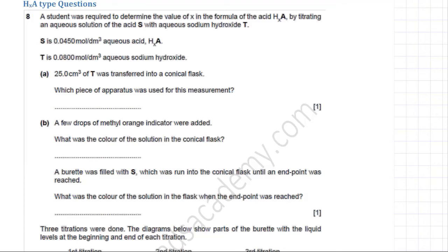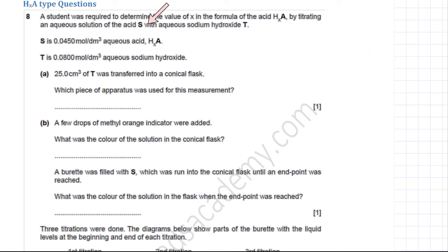This moles and titration question, taken from an ATP Olives paper, deals with finding the formula HXA of an acid, where X represents the number of hydrogen ions. A student was required to determine the value of X by titrating an aqueous solution of the acid S with aqueous sodium hydroxide T. The concentrations of both substances are given.